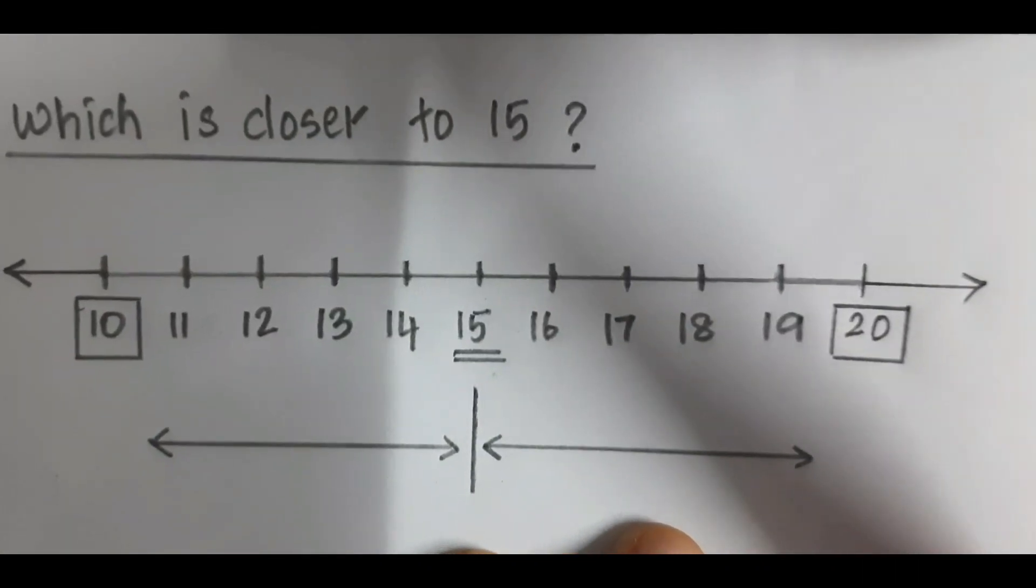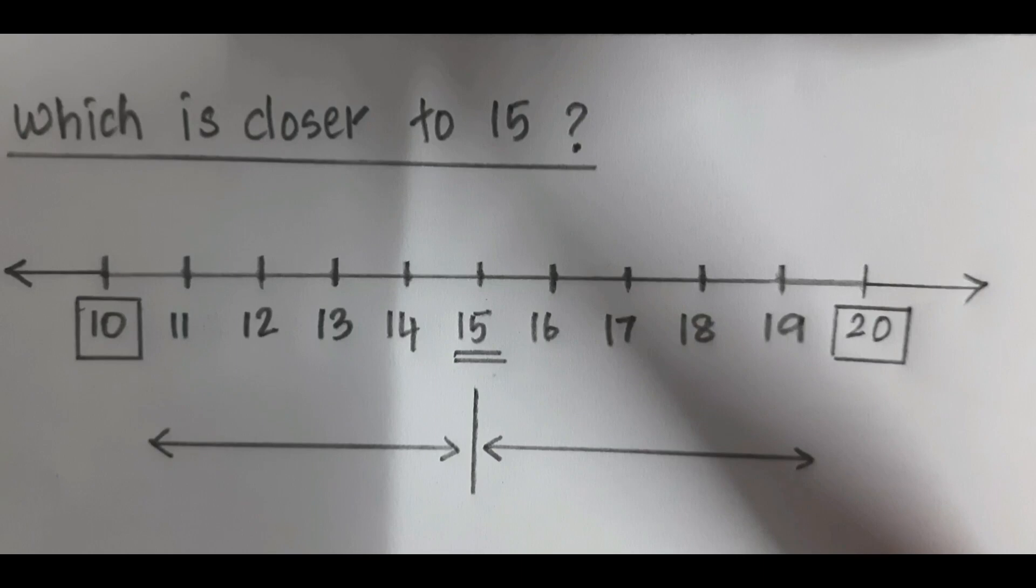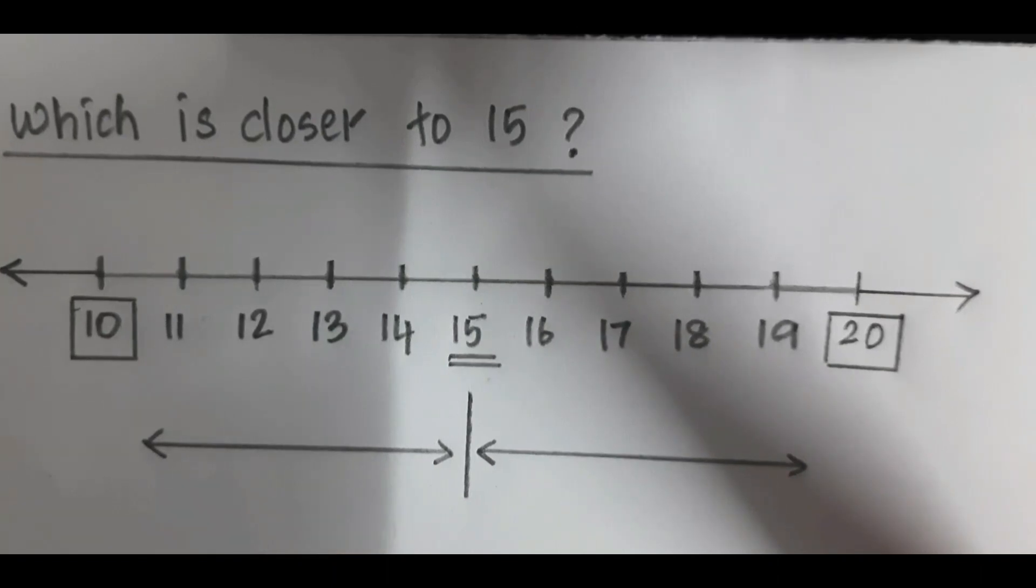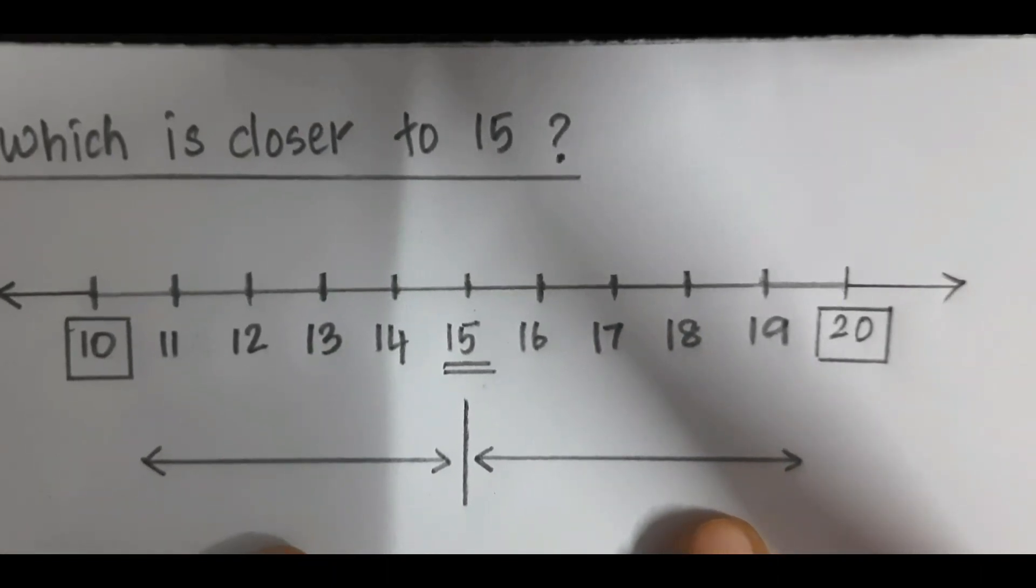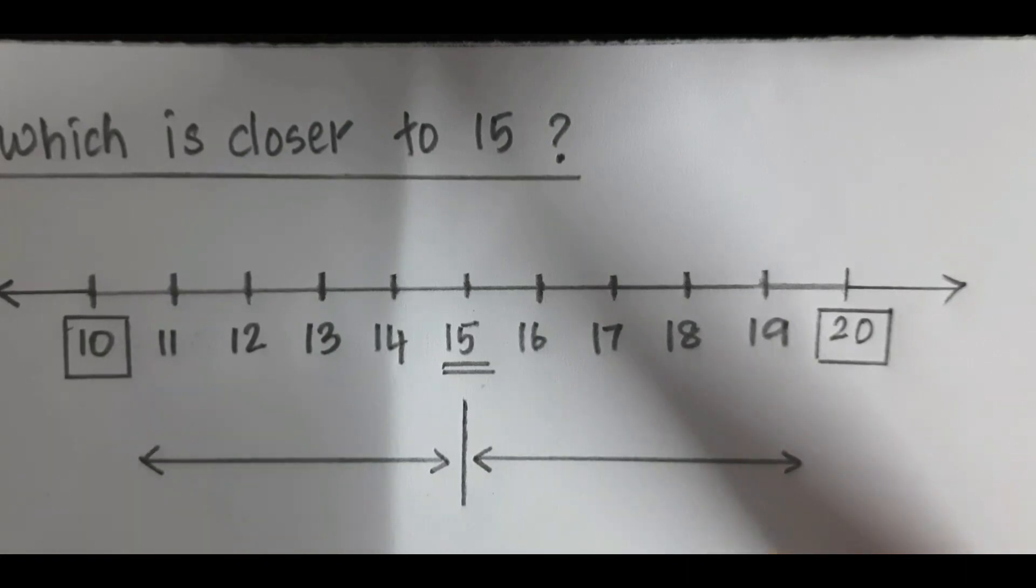Ask the child to mark numbers from 10 to 20 on a number line, this way. Here, you can see the arrows are of equal length.